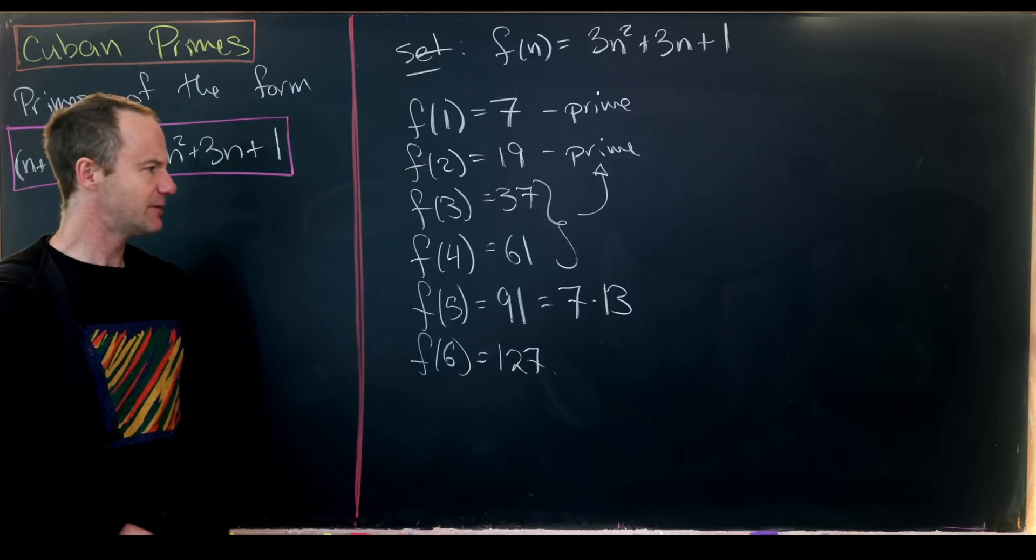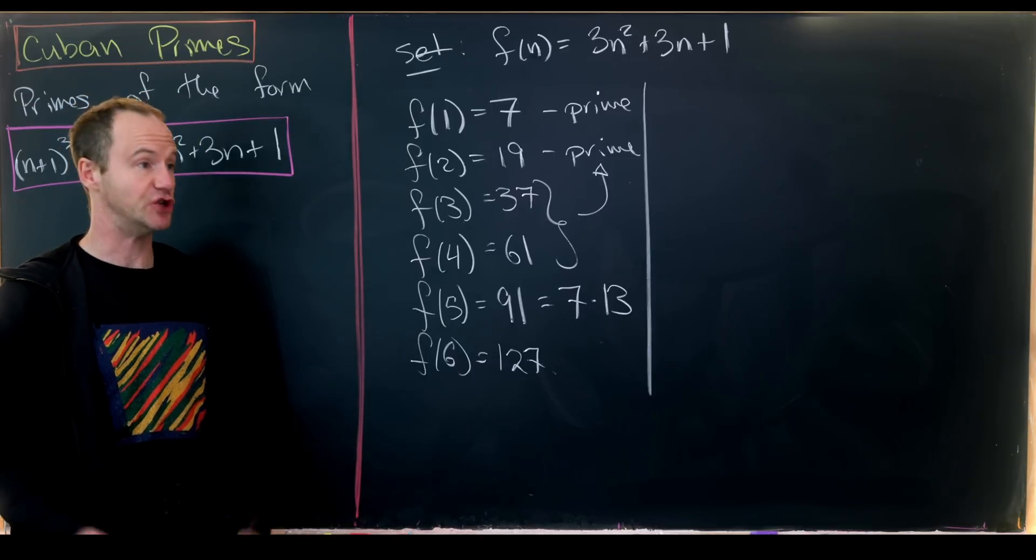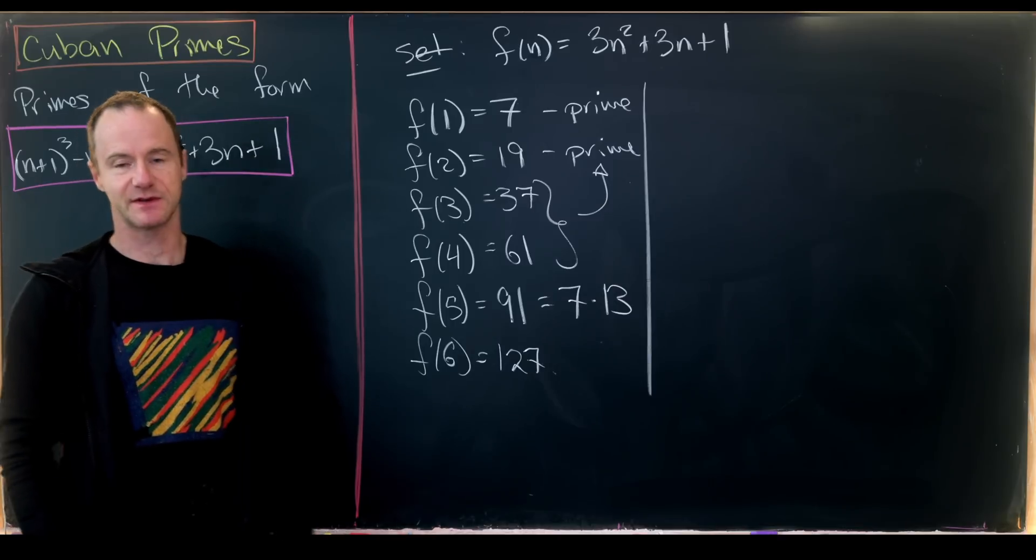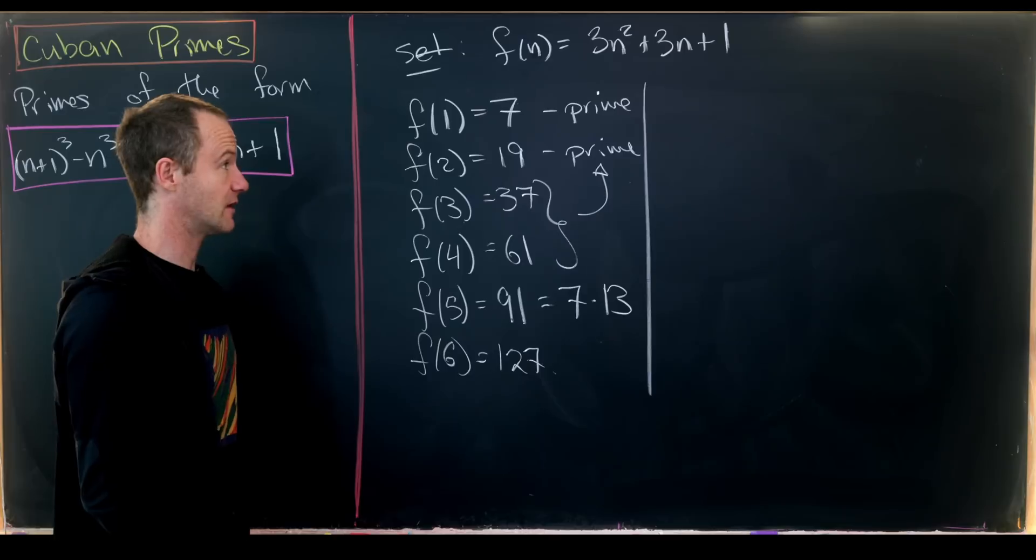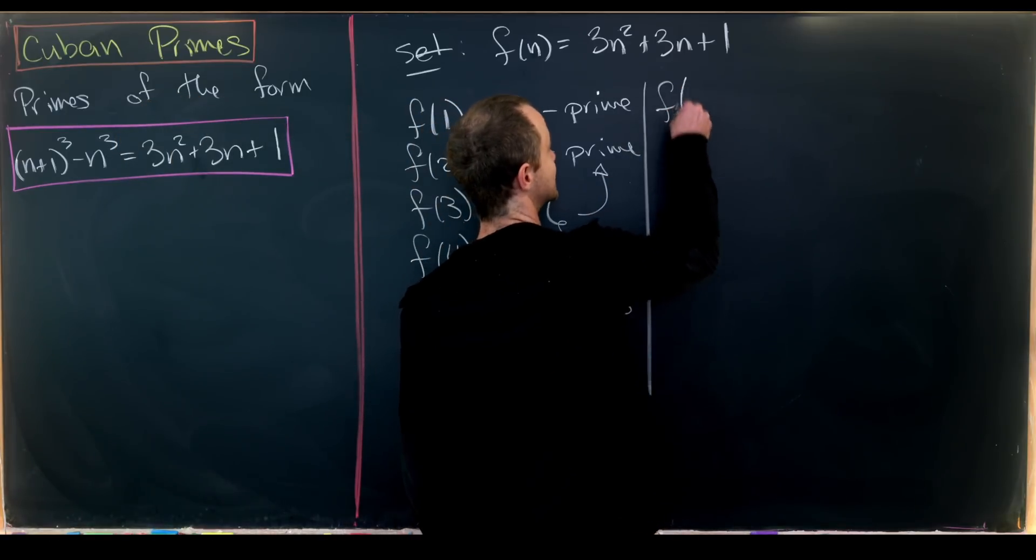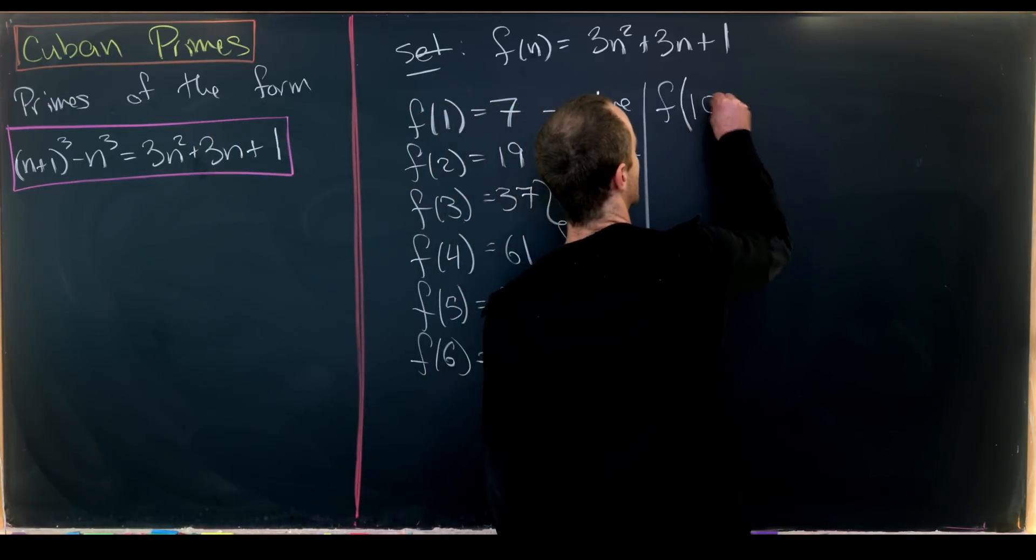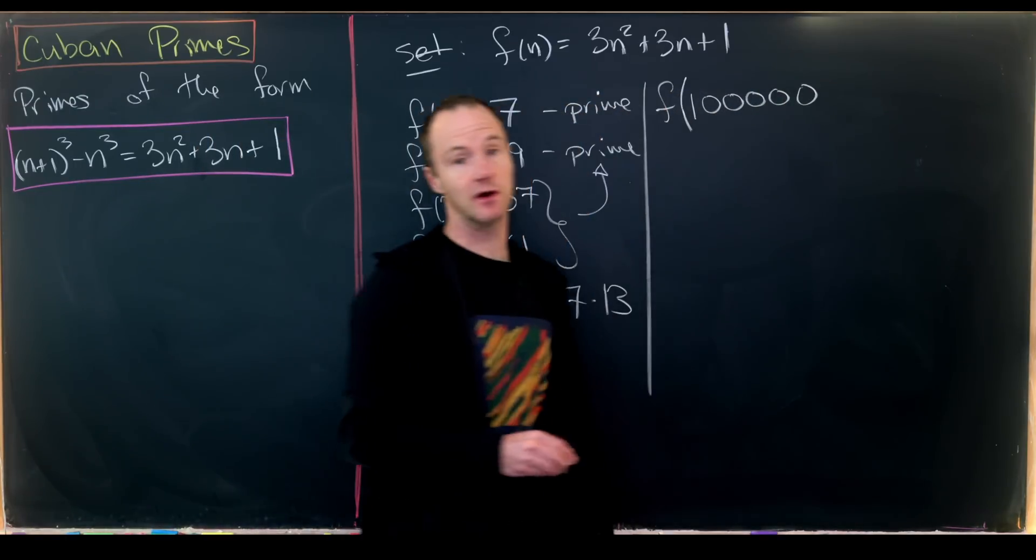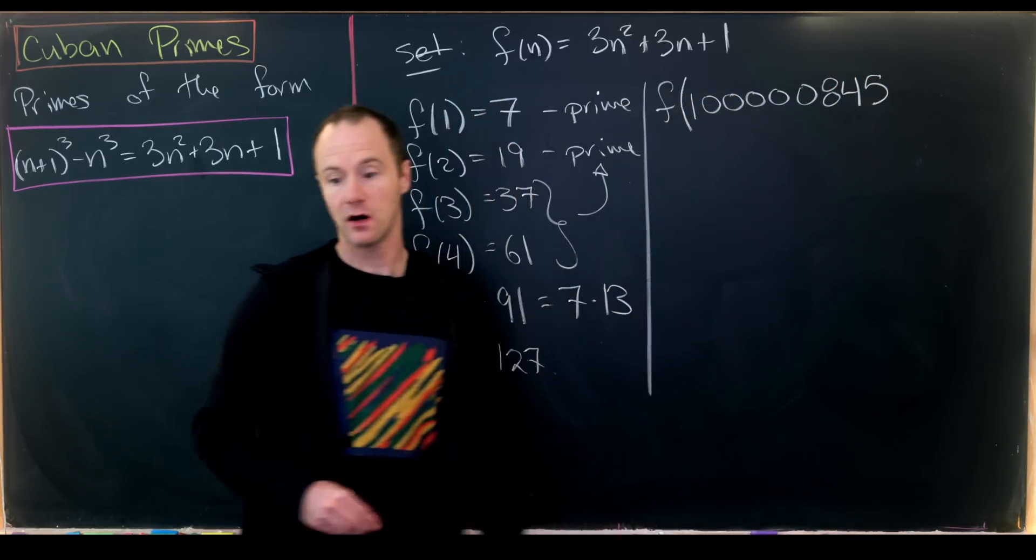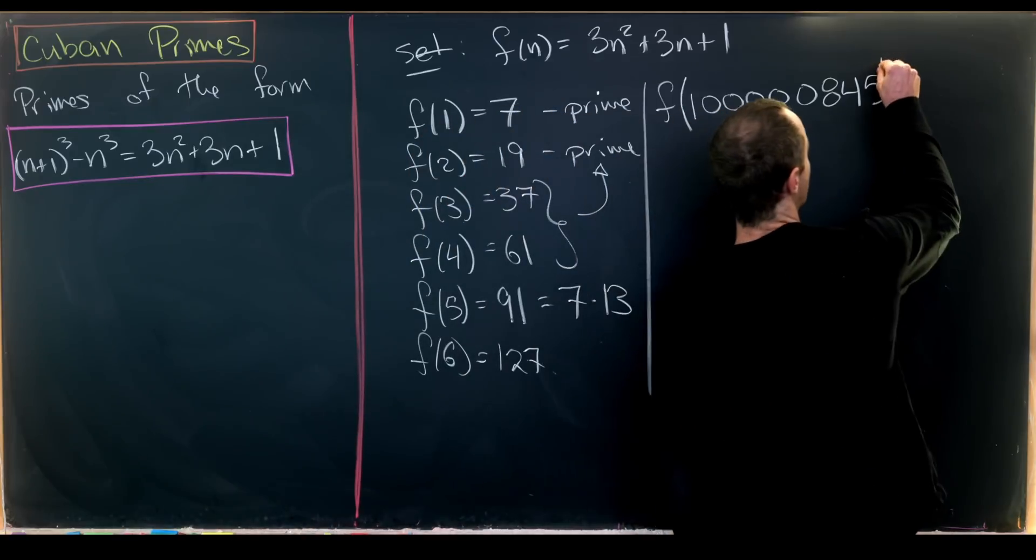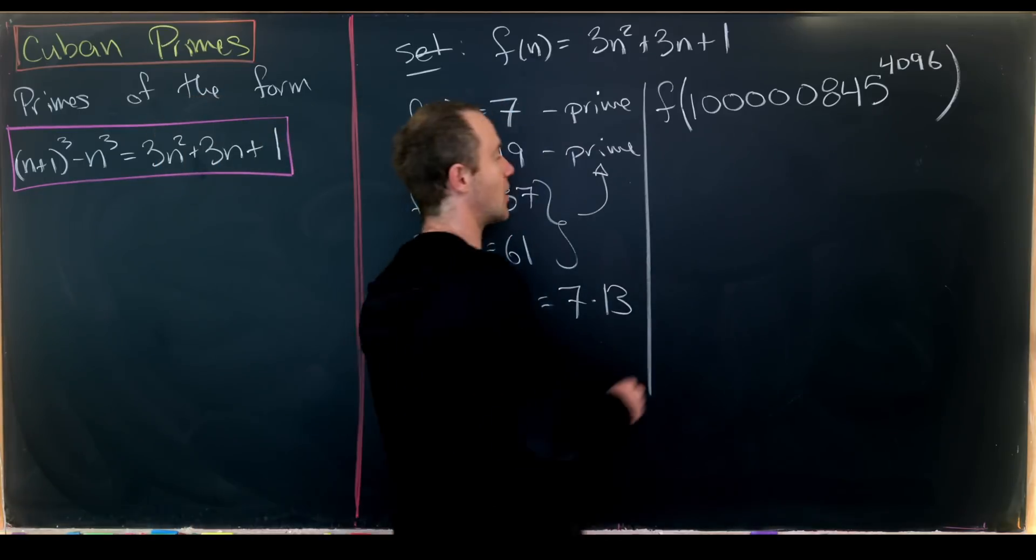A typical question when looking at types of primes is: what's the largest known prime of this type? The largest known Cuban prime is f evaluated at (100000845)^4096.